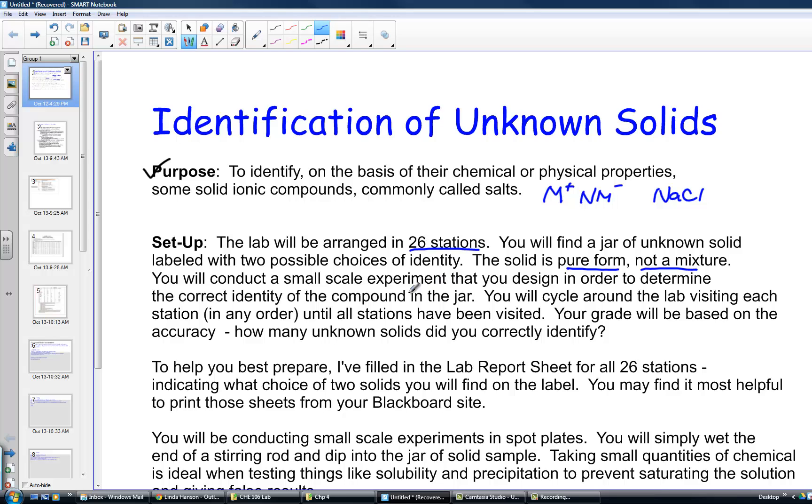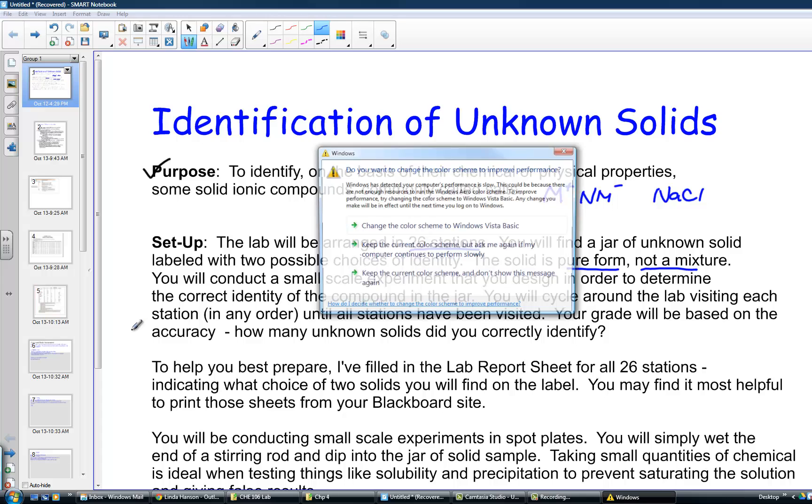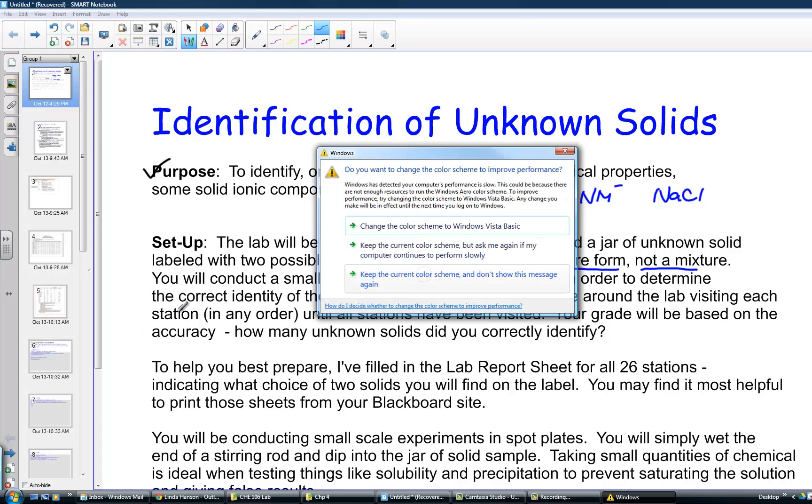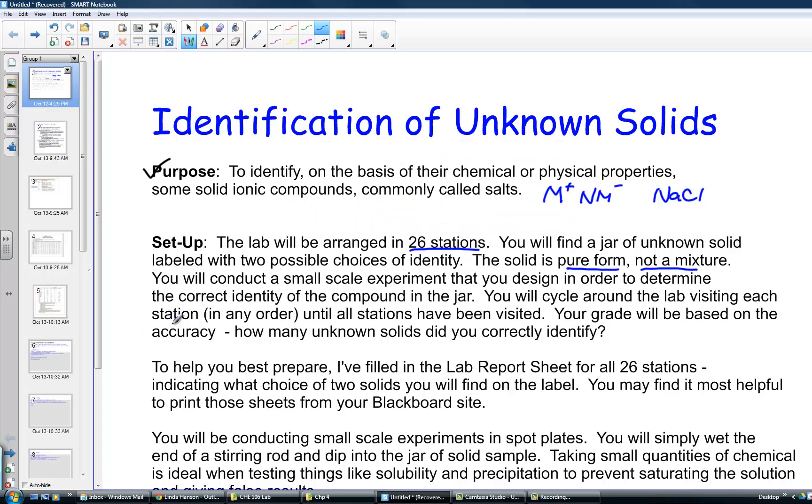Your job is to conduct a small scale experiment that you design in order to determine the correct identity of the compound in the jar. You'll simply cycle around the lab, visiting each lab station, going in any order, and conduct a little test to identify each unknown. Your grade will be based on the accuracy of properly identifying the 26 stations.